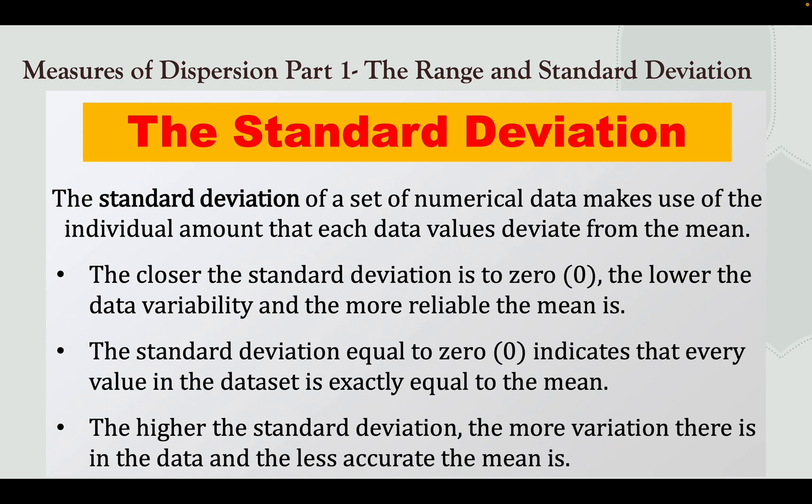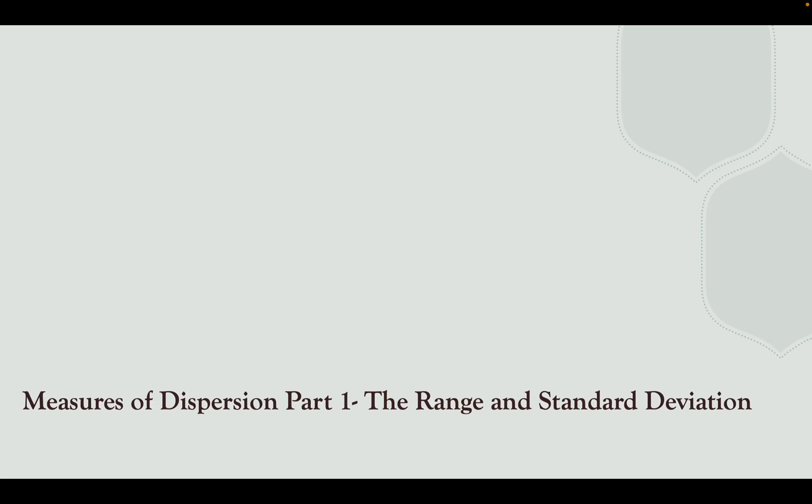The closer the Standard Deviation is to 0, the lower the data variability and the more reliable the mean is. If the Standard Deviation equals 0, it indicates that every value in the data set is exactly equal to the mean. The higher the Standard Deviation, the more variation there is in the data and the less accurate the mean is.